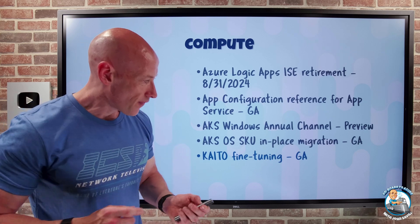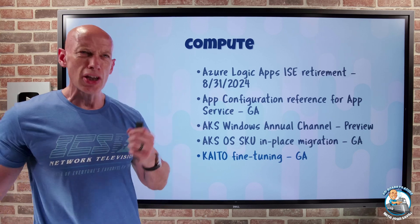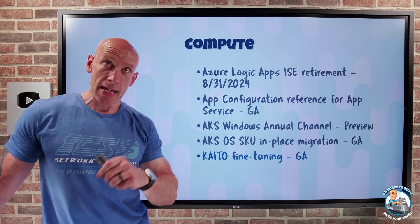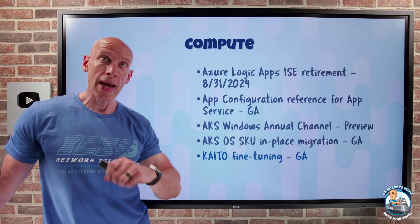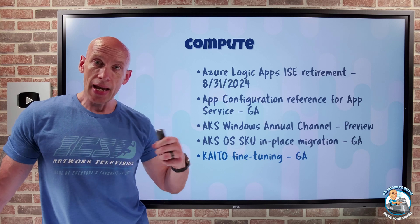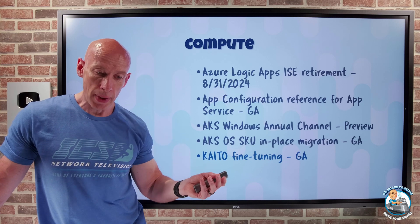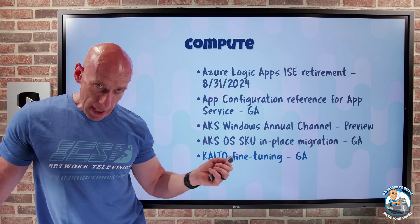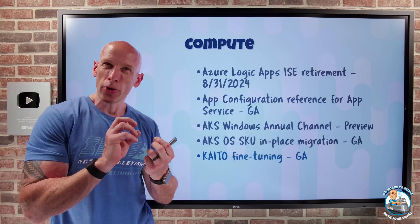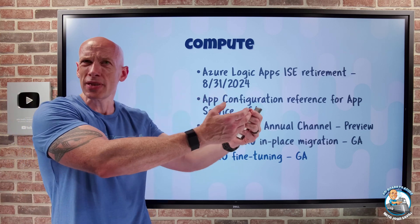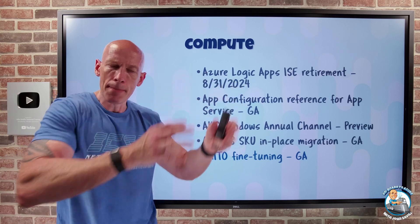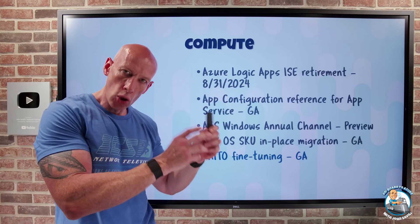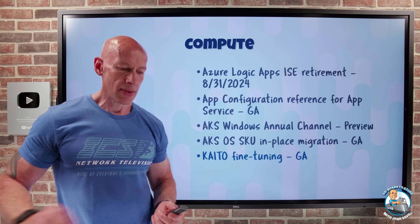Kaito fine-tuning has gone GA. Kaito is the Kubernetes AI Toolchain Operator — it makes it easier to deploy and operate inferencing AI models on a Kubernetes cluster. Now through the same tooling, you can select a tuning method, which is useful if you have domain-specific language or want the model to behave in a particular new way, all within the Kaito solution.